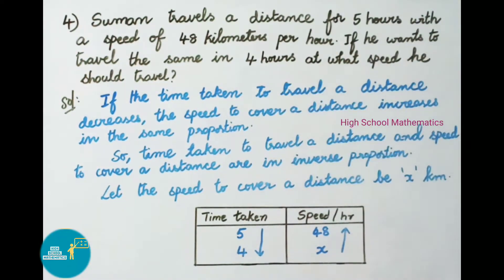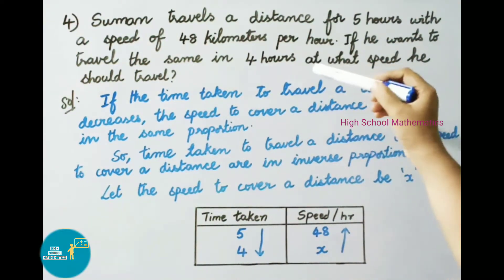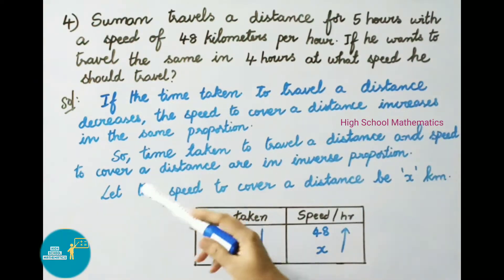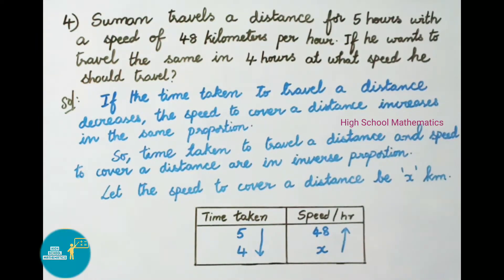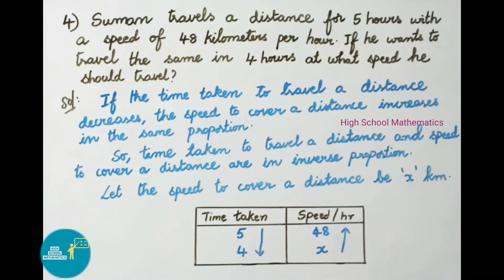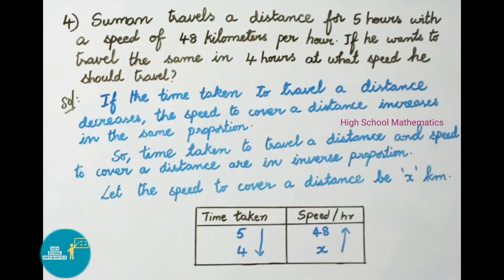Here number of hours are decreasing — 5 hours to 4 hours — so speed will be increasing. Time taken to travel a distance and speed to cover a distance are in inverse proportion. Let the speed to cover the distance be x kilometers per hour. In the tabular form, time taken and speed per hour: at 5 hours the speed is 48 km/h; in 4 hours at what speed can he cover the same distance? Speed is taken as x. The inverse proportion is: 5 is to 4 equals x is to 48.